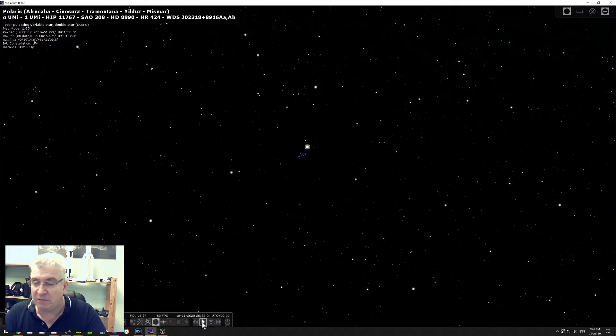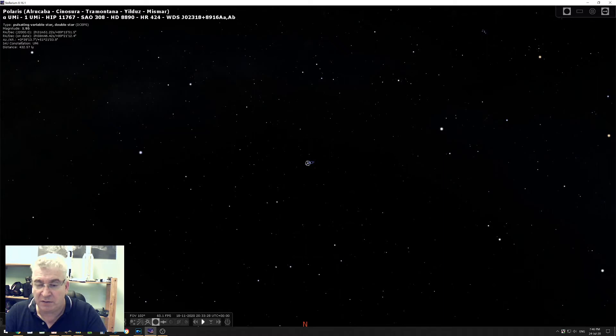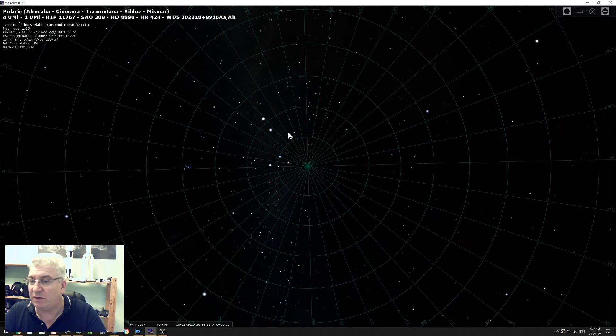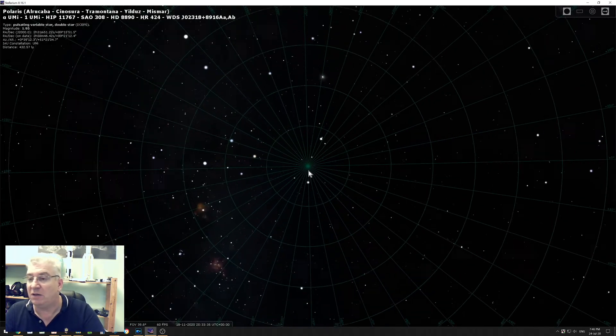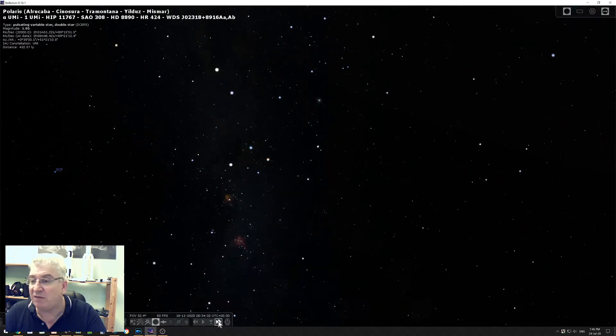Similarly, if I zoom out and put the grid back on, that's looking straight up. You can also look straight down towards the south if we were in Australia, for example, and look straight down. Do the same thing, accelerate time.